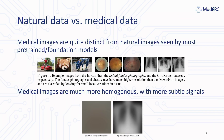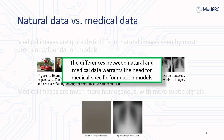I think that we do need specialist models because of the differences between medical data and natural data. Looking at these medical images is a good example of that — you can see how these medical images are quite distinct from natural images. Stable diffusion, which is an image generation model, is mostly trained on natural images, so it's no surprise why it's not doing well on some of these medical images. Overall, because of these differences in medical and natural data, there is a need for medical-specific foundation models.